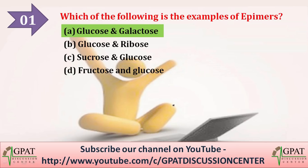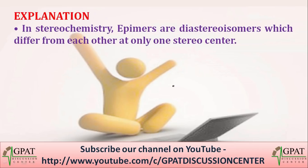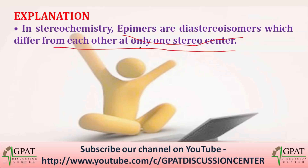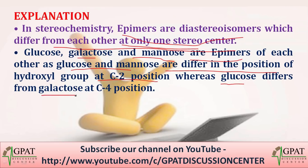In stereochemistry, epimers are diastereomers which differ from each other at only one stereocenter. Glucose, galactose, and mannose are epimers of each other. Glucose and mannose differ in the position of the hydroxyl group at C2 position, whereas glucose and galactose differ at C4 position.